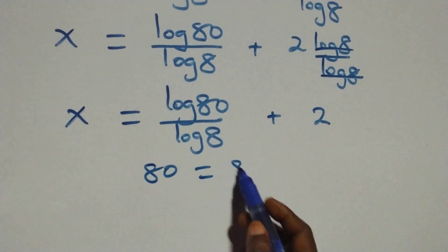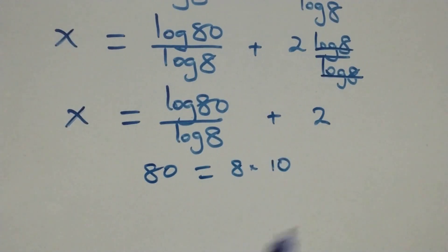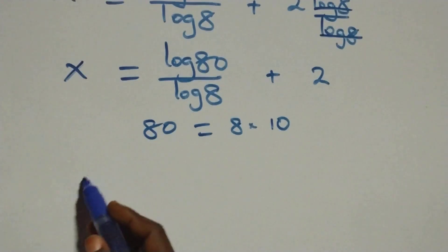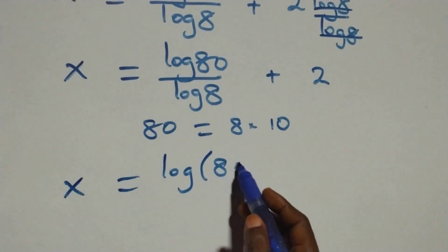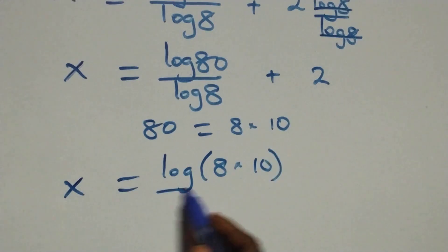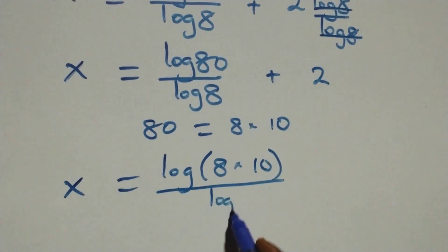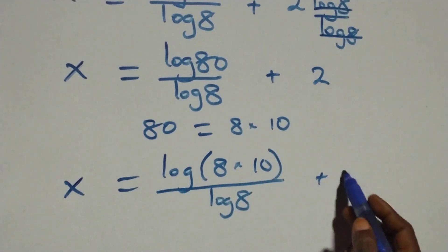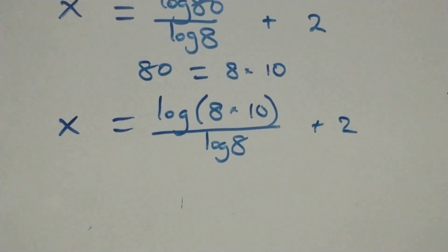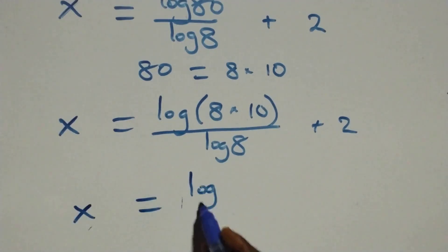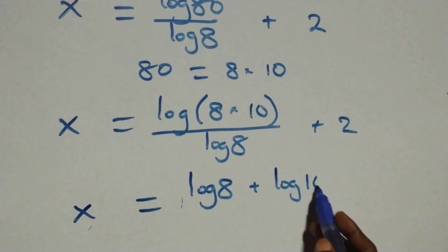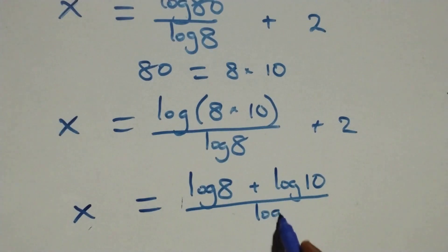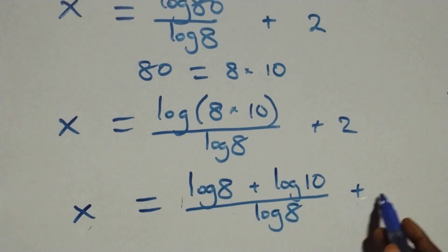Also, 80 is the same as 8 times 10. So x equals log(8 times 10) over log 8 plus 2. Applying the log product rule, log 8 cancels, and we have x equals log 10 over log 8 plus 2.